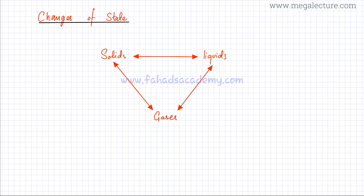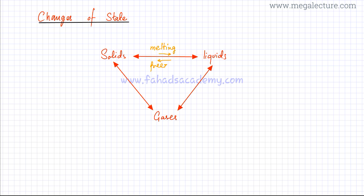I'm going to discuss all the changes of state. If you move from a solid to liquid, this would be called melting. So if a solid changes into liquid, that's melting — for example, ice changing into liquid water. Vice versa, if a liquid changes into a solid, that is freezing. Similarly, if liquids turn into gas — for example, water boils and changes into steam — that change of state is described by boiling.